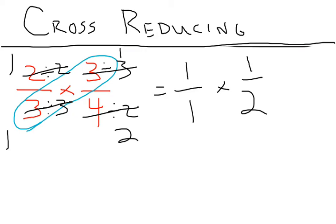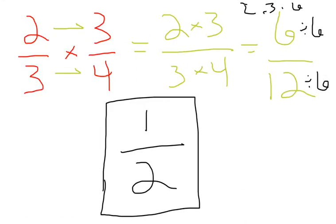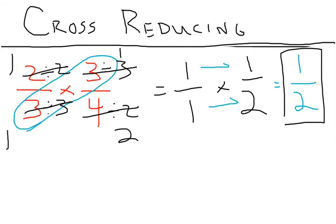Now this is very simple multiplication. Following our process of going straight across, I have 1 times 1, which equals 1, and 1 times 2, which equals 2. So 1 half is my final answer. Because I cross-reduced, I know that this is all the way reduced — I don't have to do any reducing at the end. Remember, we started with the same problem, 2 thirds times 3 fourths, and we got the same answer both ways: 1 half. So we can reduce in the end, or we can cross-reduce.